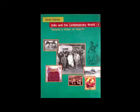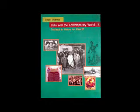The most successful of these clubs was that of the Jacobins, named from the former convent of Saint Jacob in Paris. The members belonged mainly to the less prosperous sections of society — small shopkeepers, artisans such as shoemakers, pastry cooks, watchmakers, printers, as well as servants and daily wage workers. Their leader was Maximilien Robespierre. A large group among the Jacobins decided to start wearing long striped trousers similar to those worn by dock workers, to set themselves apart from fashionable society — especially nobles who wore knee breeches. These Jacobins came to be known as the sans-culottes, literally meaning 'those without knee breeches.' Sans-culottes men wore in addition the red cap that symbolized liberty, though women were not allowed to do so.